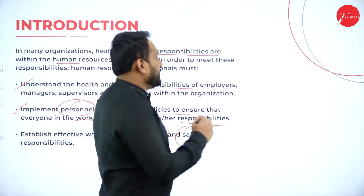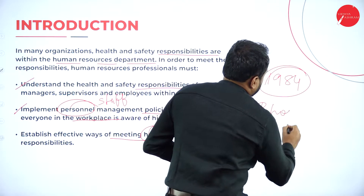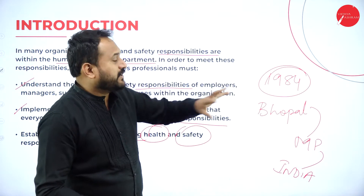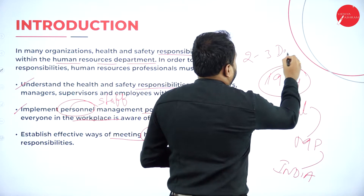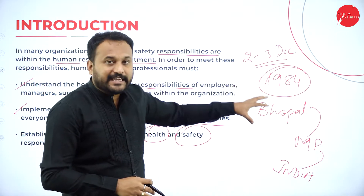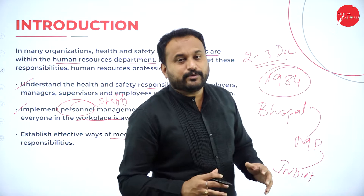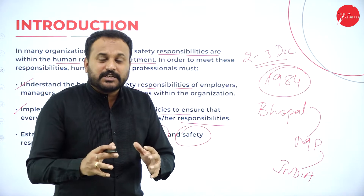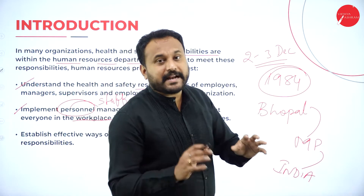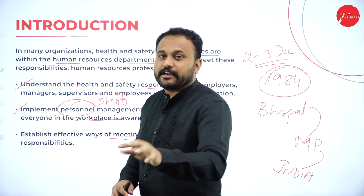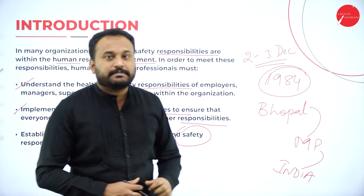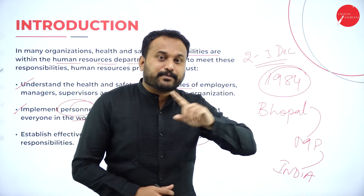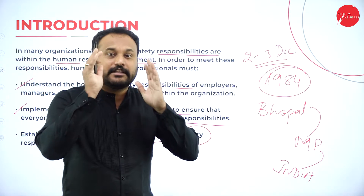Whenever this topic of health and safety comes up, I always quote the incident that happened in 1984 in Bhopal, Madhya Pradesh, India — precisely on 2nd and 3rd December. A pesticide company had a gas leakage, and nearby people who were sleeping in their homes and on footpaths couldn't get up the next morning. The reason was the lack of safety measures taken by the management. Once a life is gone, you can't bring it back — that is the responsibility of the HR manager, to check whether safety is being maintained.